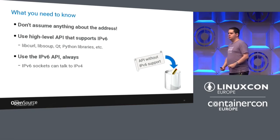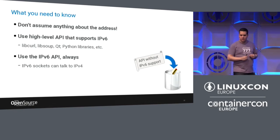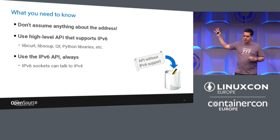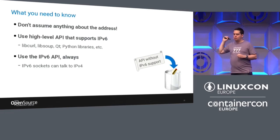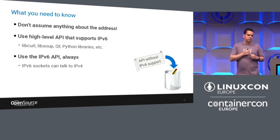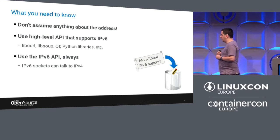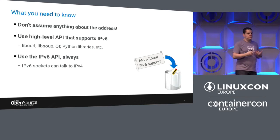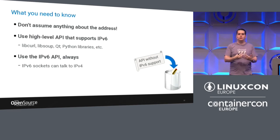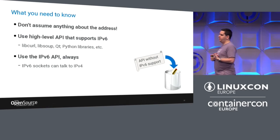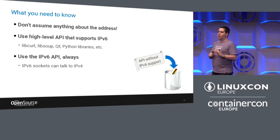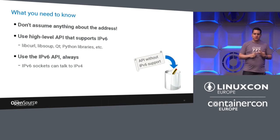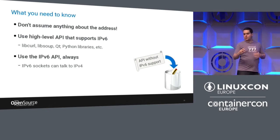Regarding API, remember two things. First, always use the IPv6 API. If you have a higher-level API than the socket API, use it and make sure it supports IPv6. If it doesn't support IPv6 in 2016, stop using it — any API that doesn't support IPv6 today doesn't deserve to be used. If you have to use the socket-level API, always use the IPv6 API because it's actually simpler than the old IPv4 API, it supports both, and you don't have to assume anything about the address.